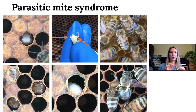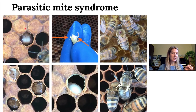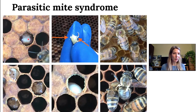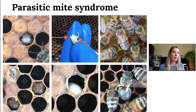With parasitic mite syndrome, we're looking for a combination of different signs in the hive. One thing we commonly see is called bald brood — where honeybees recognize there's an issue, possibly smelling reproducing mites, and chew the cappings off the brood cell. What we're left seeing is a white pupa that hasn't developed any hair yet — not a developed adult. Normally we don't see this because they're under cappings, but when varroa levels start to creep up, bees start chewing cappings off. In some cases the bees will recap these cells; in other cases they perform hygienic behavior and remove the brood.